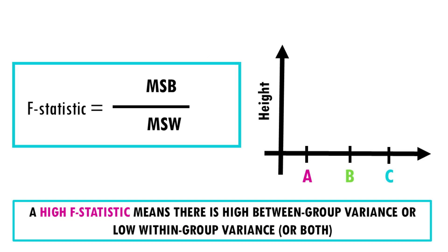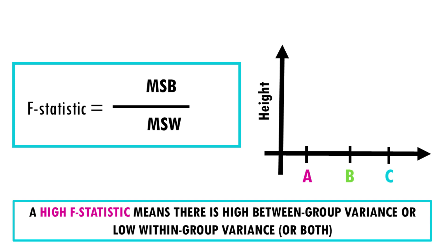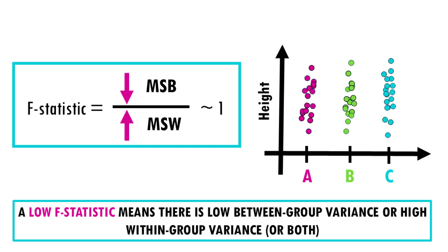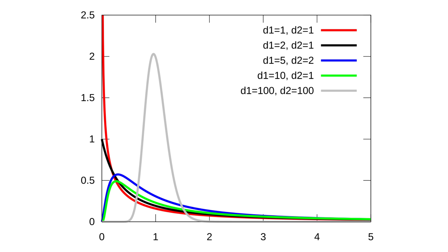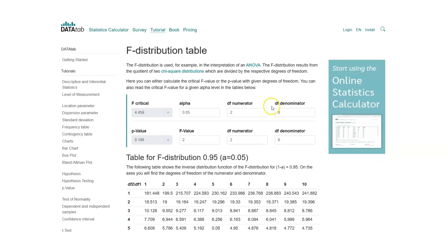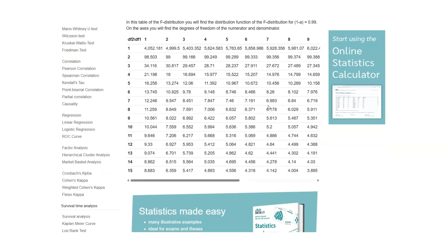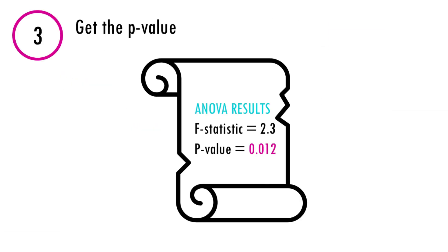You want your F value to be big — that is, small variance within groups but big variance between groups. An F value close to 1 means group means are likely similar, so the null hypothesis is not rejected. The F statistic follows an F distribution under the null hypothesis, a known probability distribution that tells us how likely we are to see different F values by chance alone. This leads us to step 3: getting the p-value.